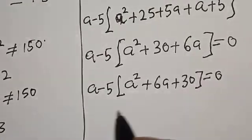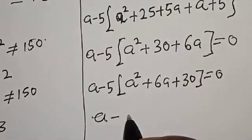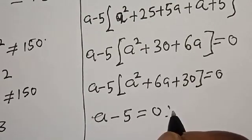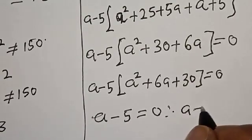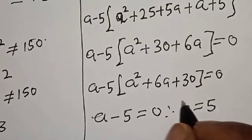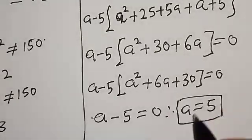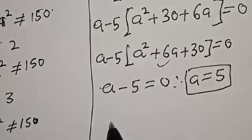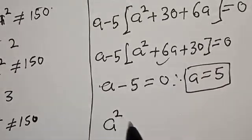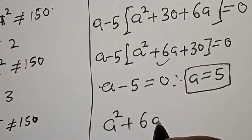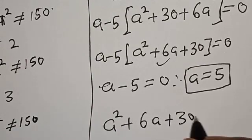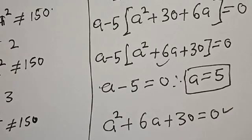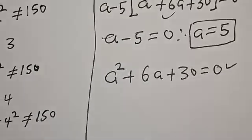A minus 5, times A squared plus 6A plus 30, is equal to 0. We have two cases here. Case one: A minus 5 is equal to 0, therefore A is equal to 5. That is one of the values of A. Case two: A squared plus 6A plus 30 is equal to 0. This is a quadratic equation — let's solve it using the quadratic formula.